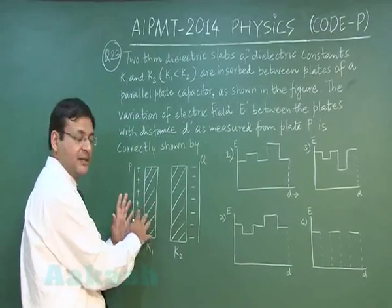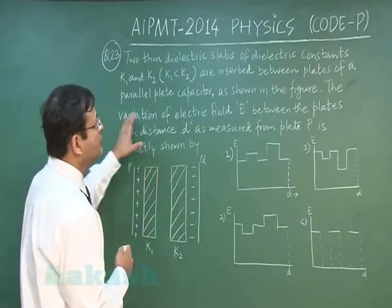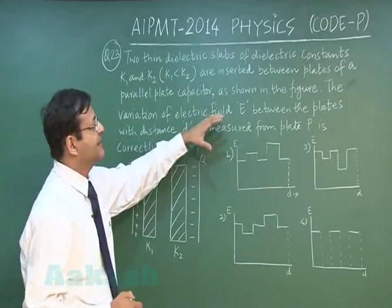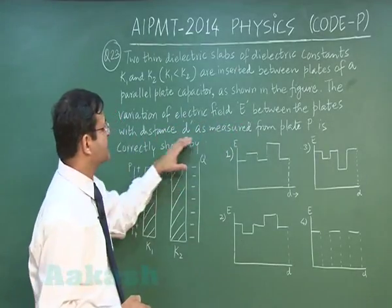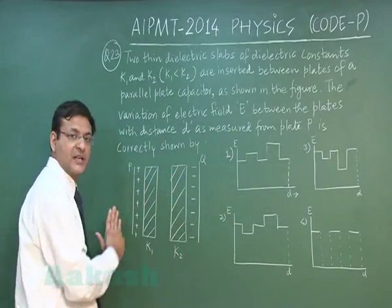So the tendency will be to decrease, then remain constant, then decrease, this kind of variation will be there. You have to find out the variation of electric field E between the plates with distance d as measured from plate p is correctly shown. You have to move from this end to this end.